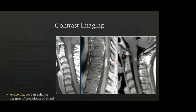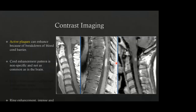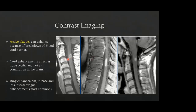On contrast imaging, active plaques can enhance due to breakdown of the blood-cord barrier. The cord enhancement pattern is not very specific and is less common than in the brain. Three enhancement patterns can be seen: ring enhancement, intense enhancement in a cigar-shaped lesion, and vague or less intense enhancement, which is the most commonly observed.